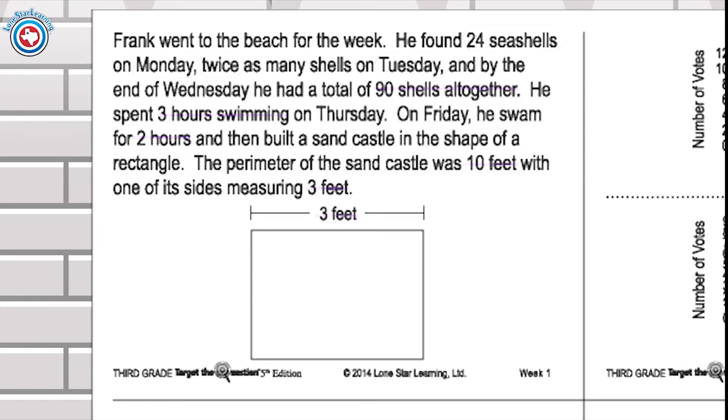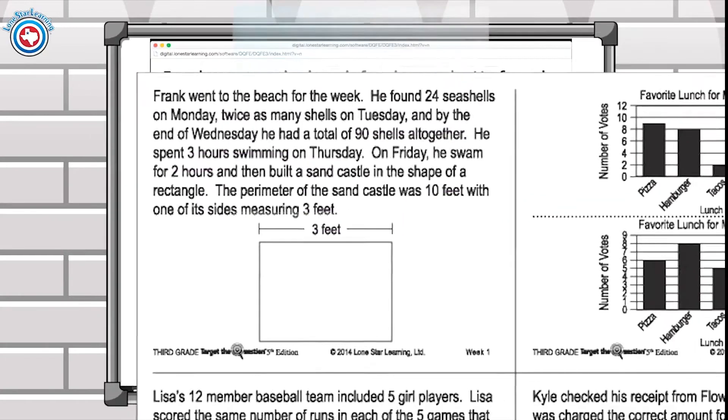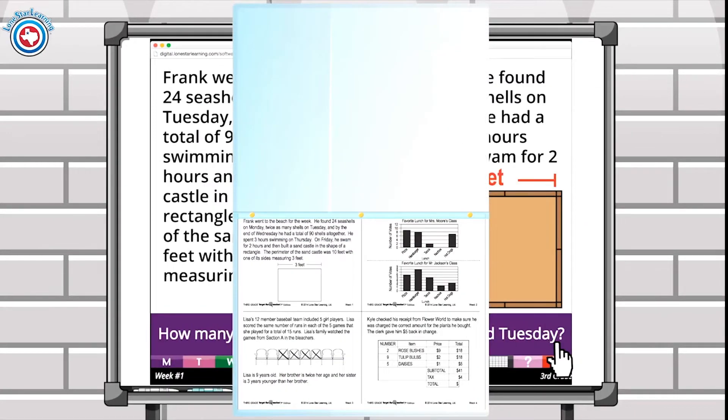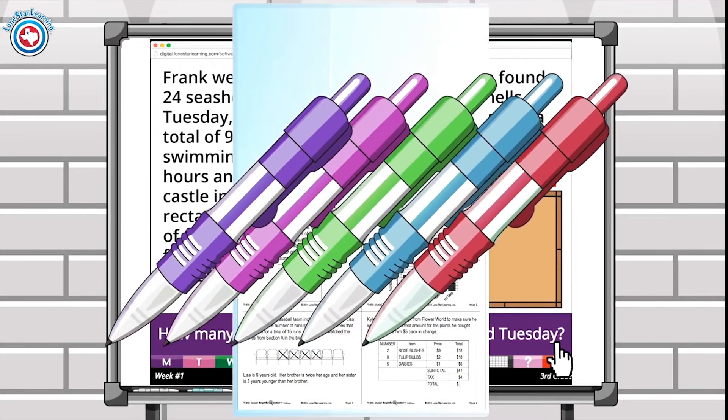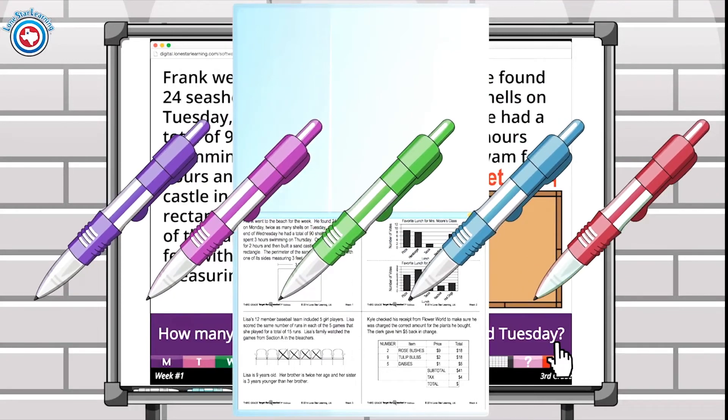You can have the students put a copy of the small scenarios in a student folder. The student can then annotate with colored pencils each day using the color corresponding to the color of the question of that day. Purple for Monday, pink for Tuesday, and so on throughout the week.